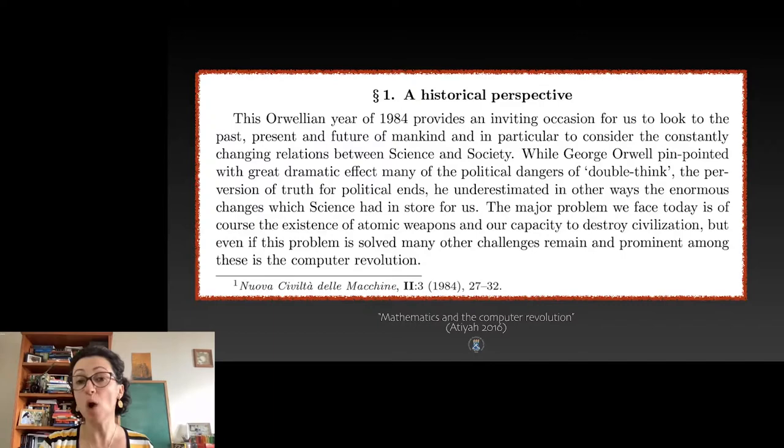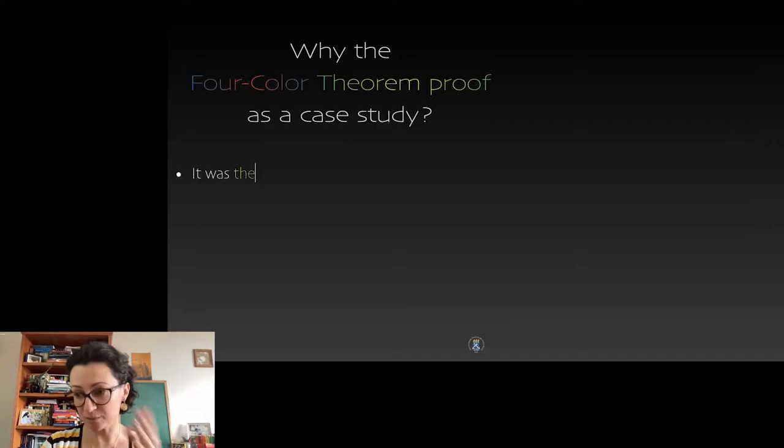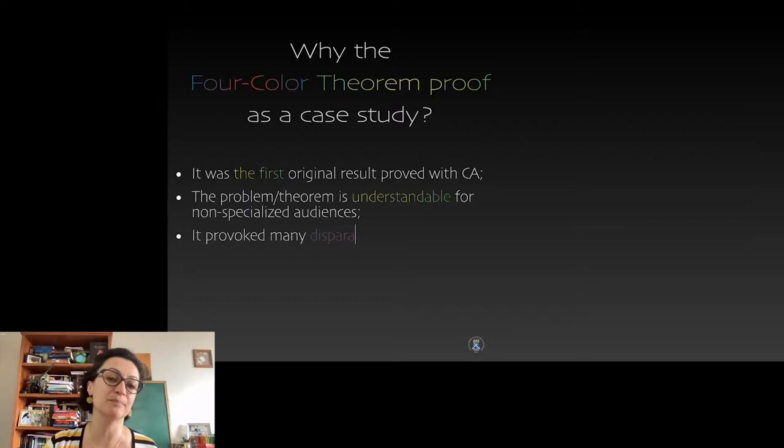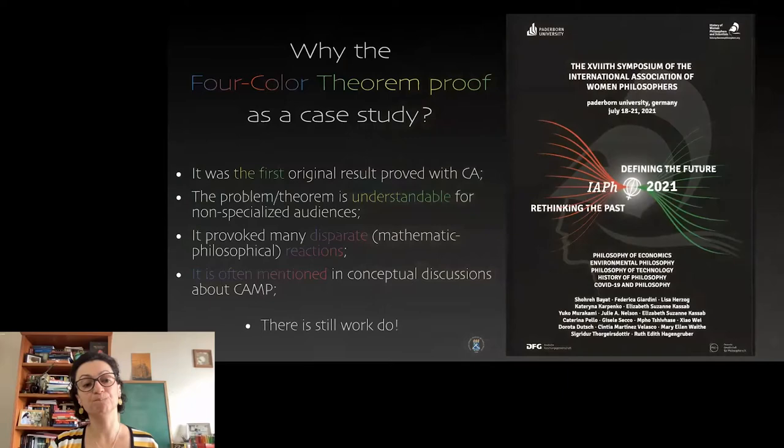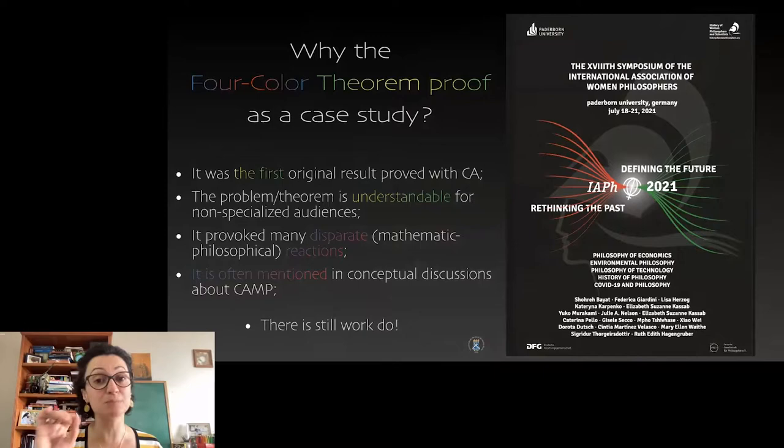So the general aim of the project I am developing is to illuminate one vital dimension of that rather multifaceted revolution in mathematics: the interplay of the diagrammatic and the algorithmic aspects of mathematical practices. But why this proof? I offer you some reasons here. First of all, because it was the first original mathematical result produced with computer assistance. It is not very difficult to understand the problem. It provoked many disparate reactions, is still mentioned nowadays whenever one talks about computer-assisted mathematics, but mostly there is still a lot of work to do as you will see.